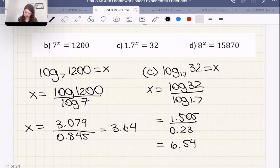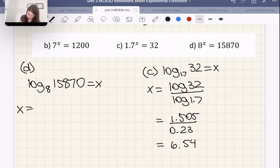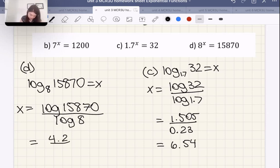All right, let's do D. Actually, I'm going to erase this first one so we can do D over here. So same deal. And if you haven't paused already and tried some for yourself right now, I encourage you to do that, please. So log with the base 8, 15870 is equal to x. Therefore, x is equal to log 15870 over log 8. Divide by 4.2 over, what's log 8?